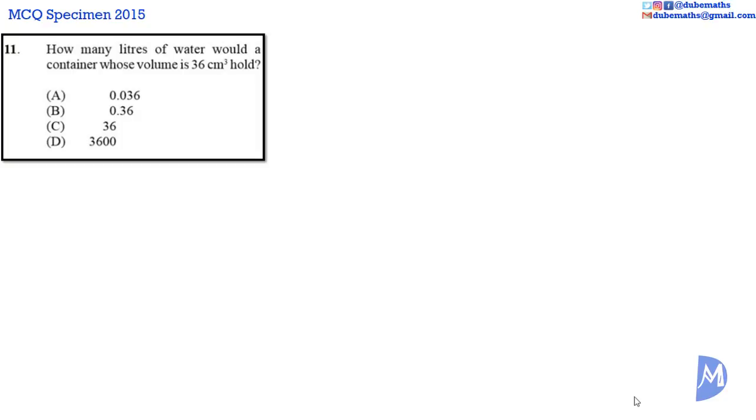The conversion is 1000 cm³ is equal to 1 litre. Therefore, 1 cm³ is equal to 1 over 1000 litres.